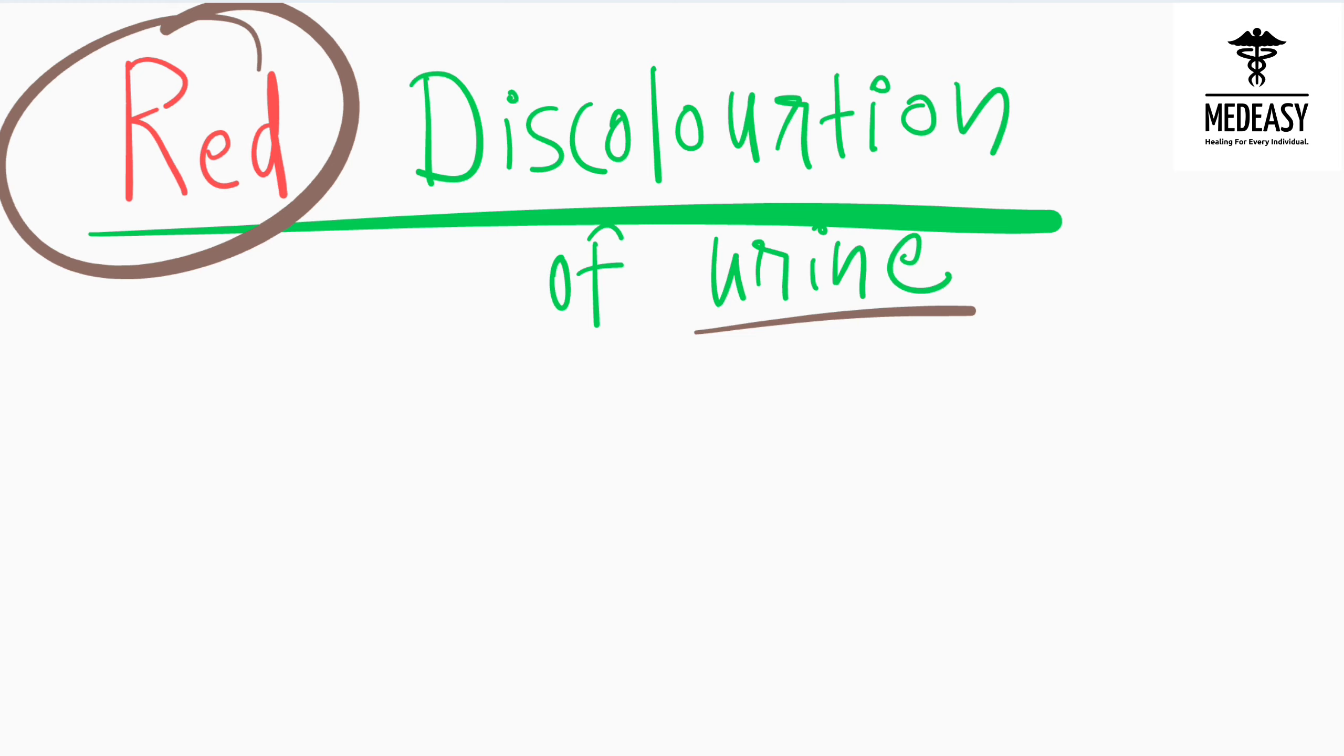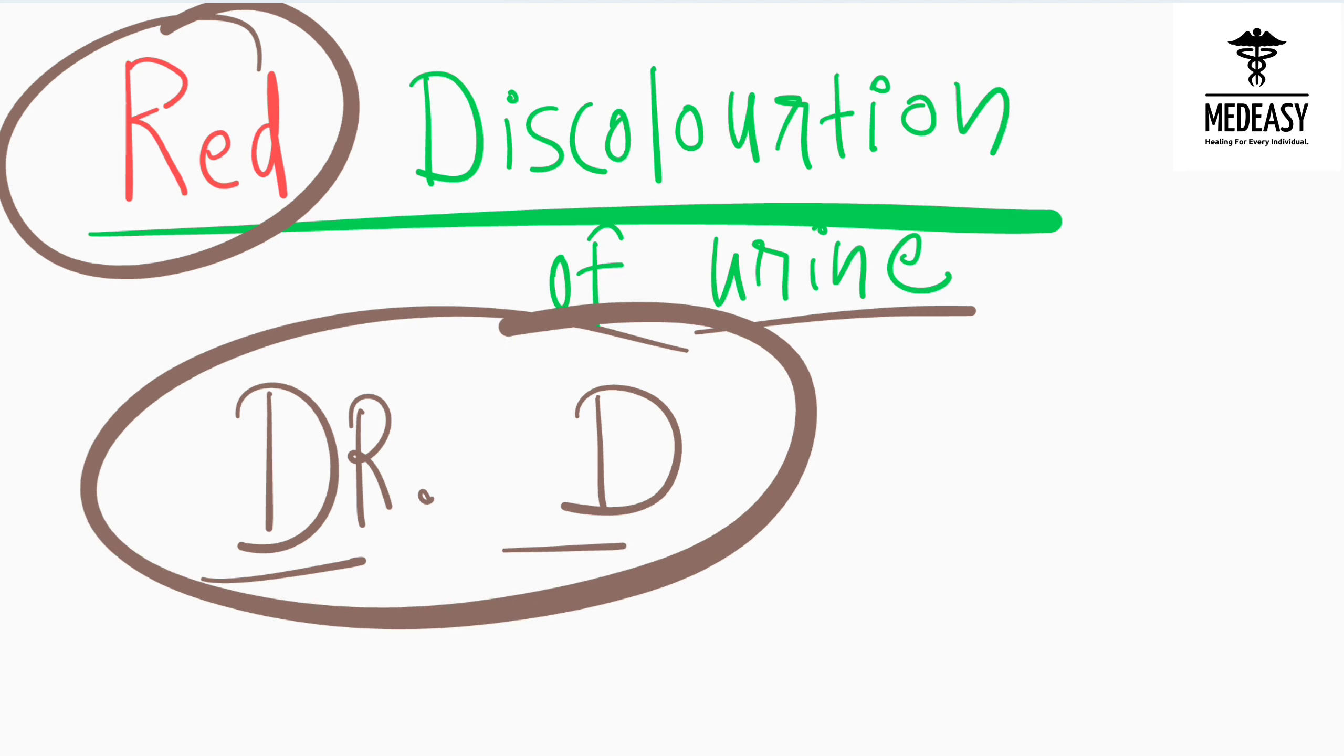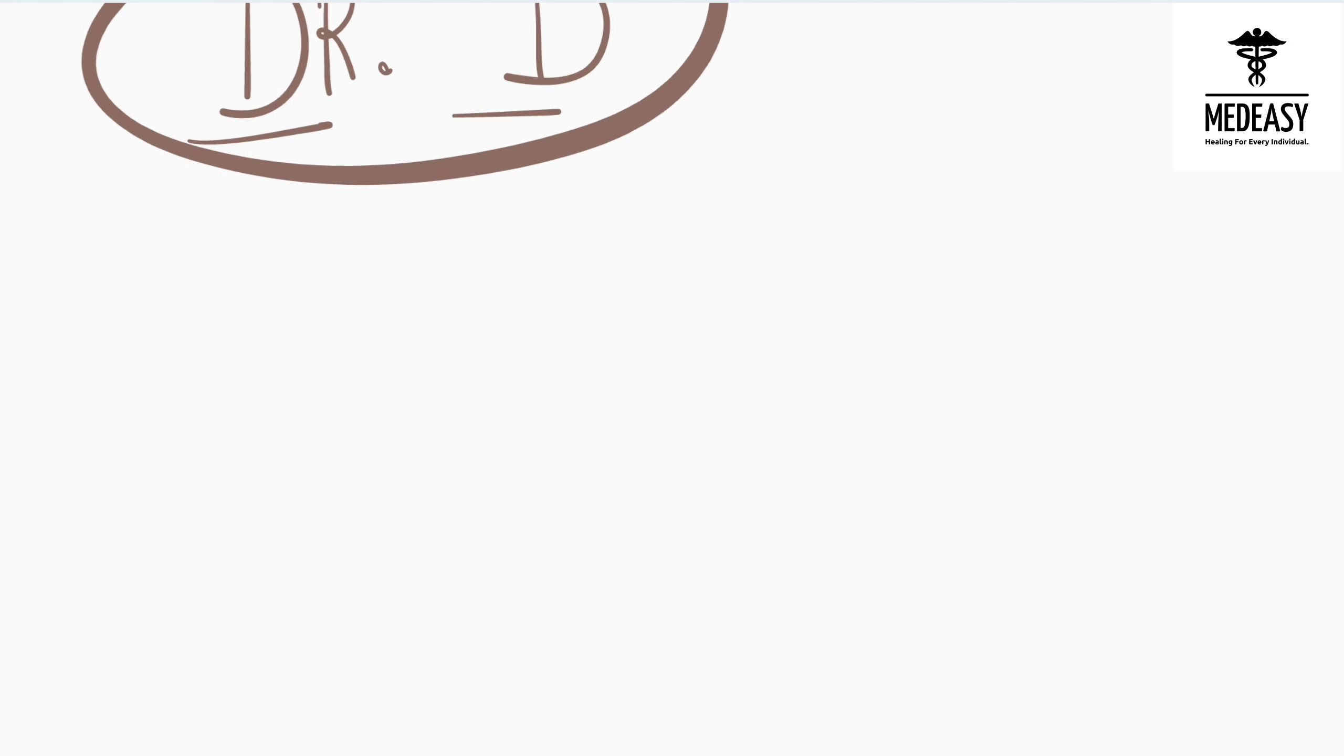For this we have a mnemonic which is DR. D. We all are doctors so we know doctor, but the starting letter after doctor is D, so DR. D is the mnemonic. From these three letters we have three drugs which cause red discoloration of urine.